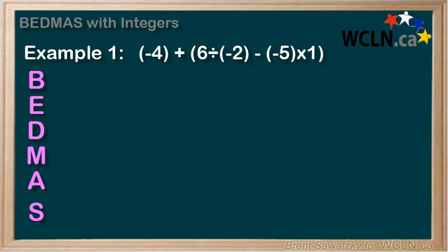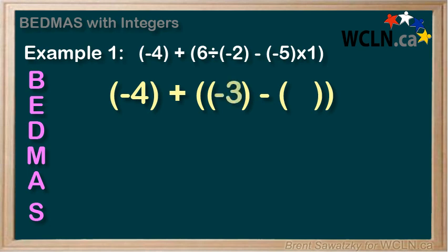Let's get started starting with B for brackets. Again, lots of brackets. Which ones include operations? Well there are definitely lots of operations to do in these brackets. So we have a mini BEDMAS within these brackets. No exponents, so let's start with multiplication and division in here. 6 divided by negative 2 is negative 3, and negative 5 times 1 is negative 5.